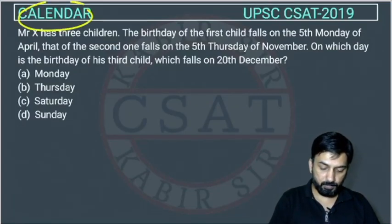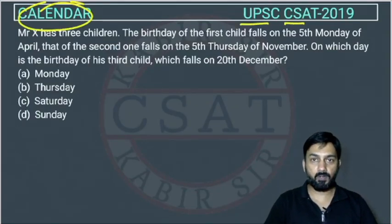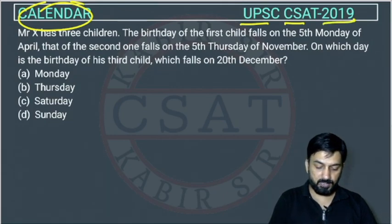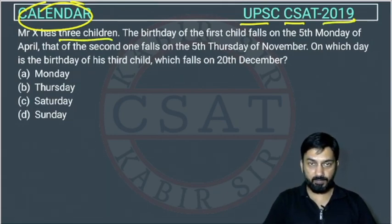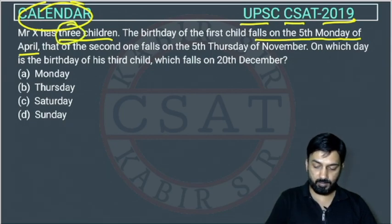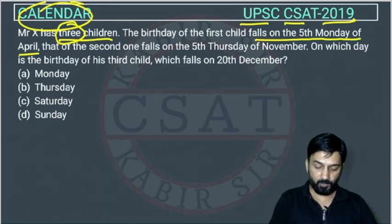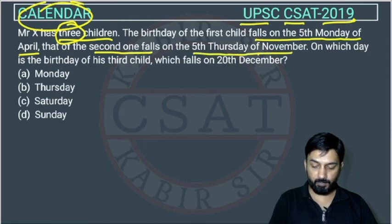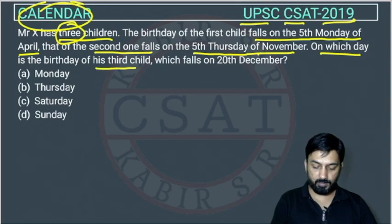This is a question from the calendar chapter asked by UPSC in their CSAT paper of 2019. Mr. X has three children. The birthday of the first child falls on the fifth Monday of April. That of the second one falls on the fifth Thursday of November. On which day is the birthday of his third child, which falls on 20th December?